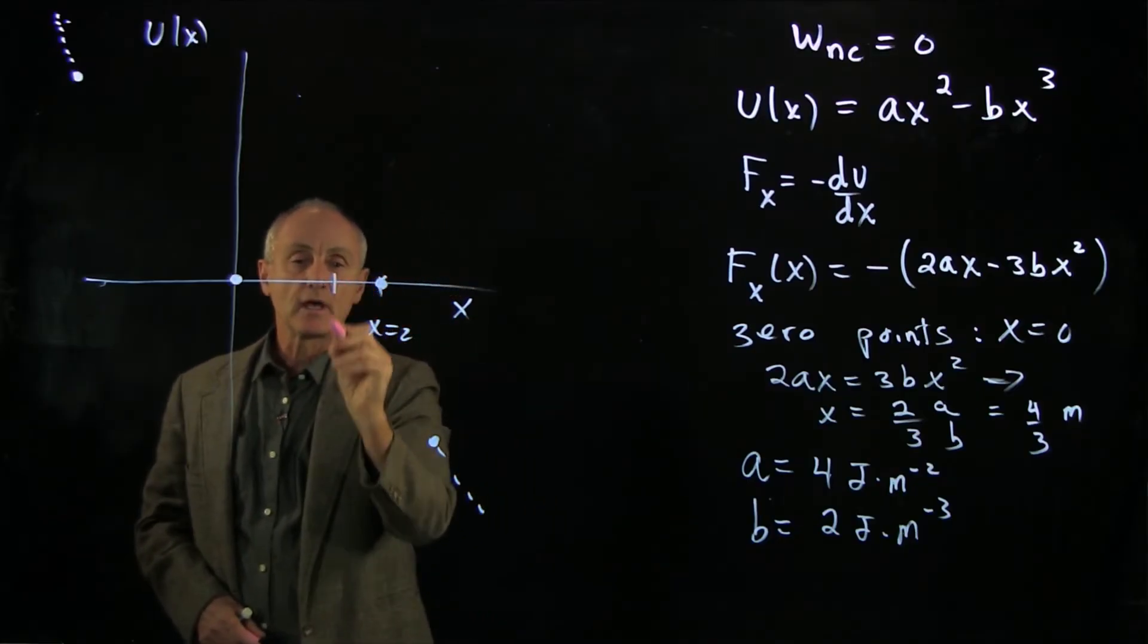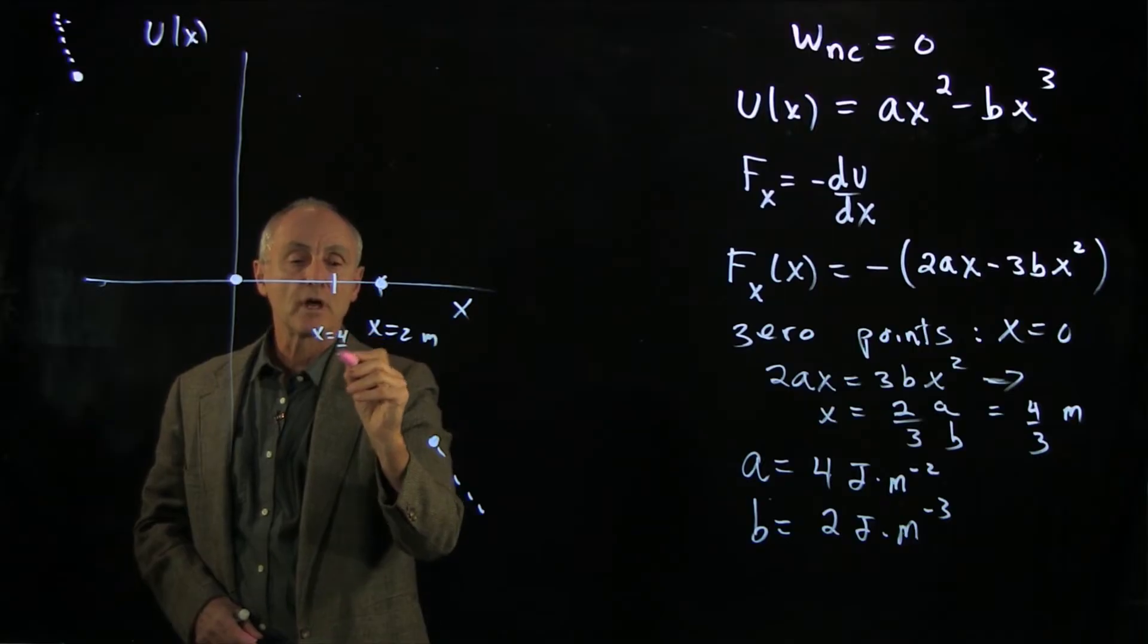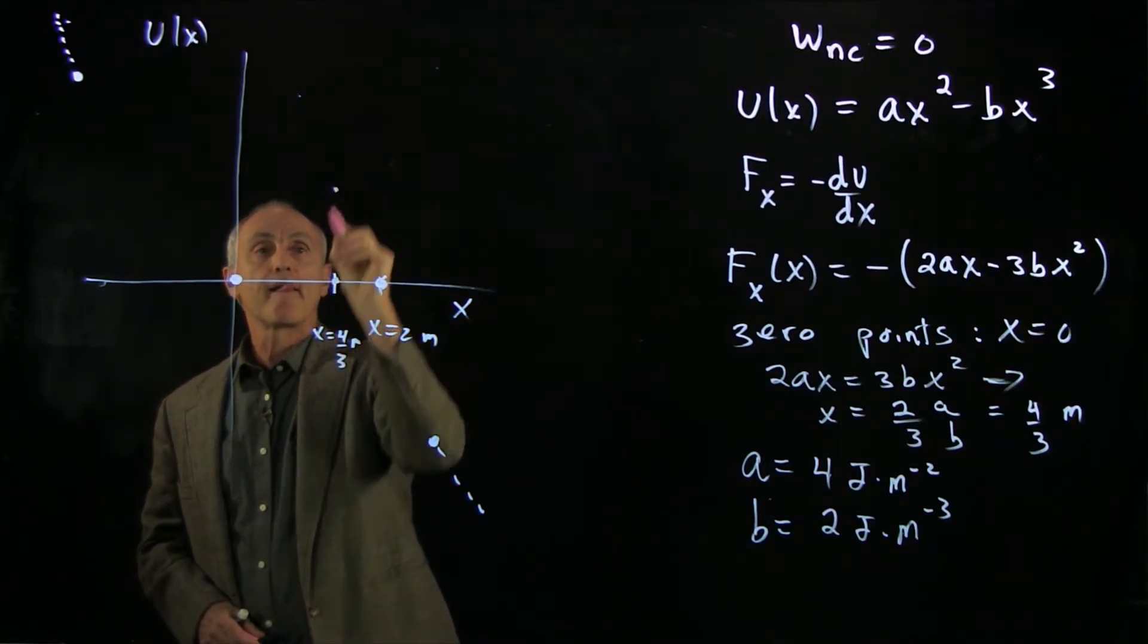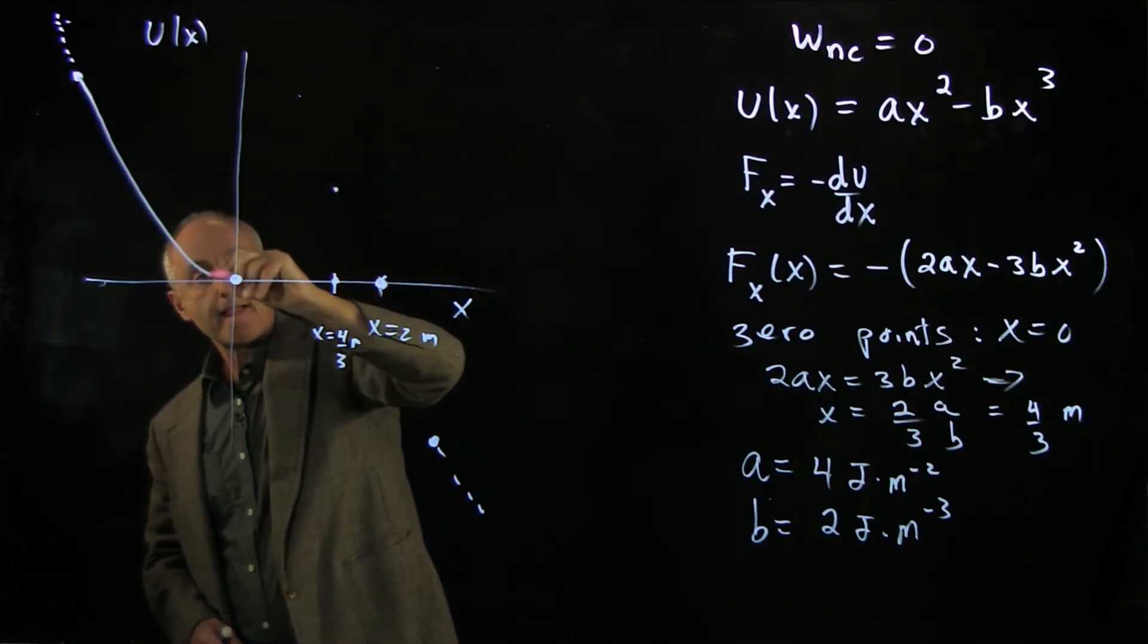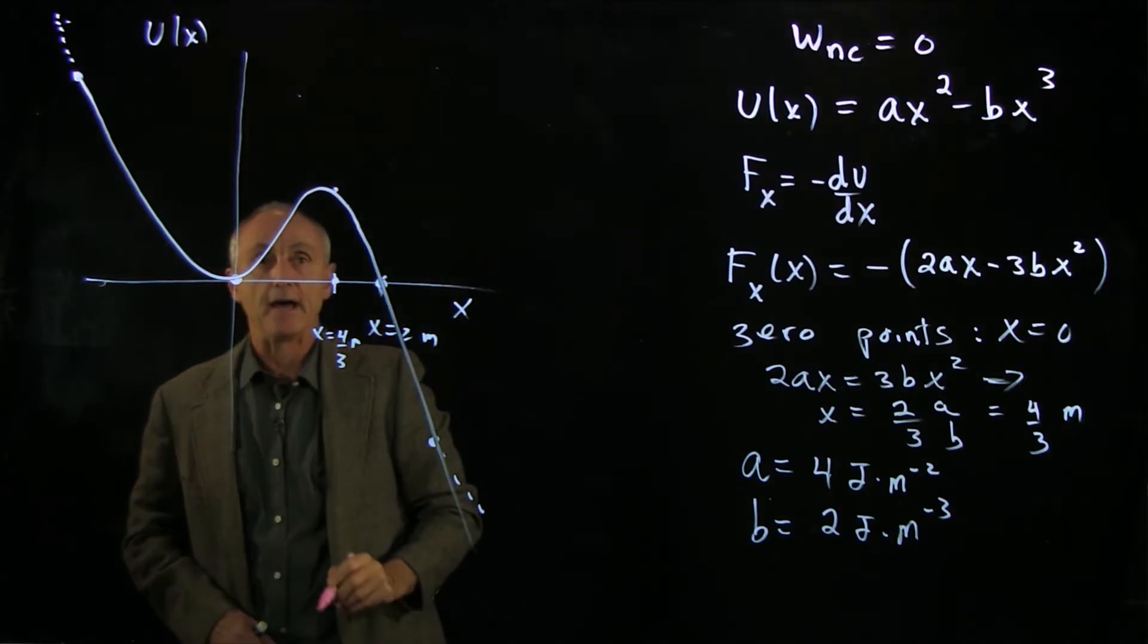We said that the force at x = 4/3 had a zero. So if we plot this function, it's going to look something like that.